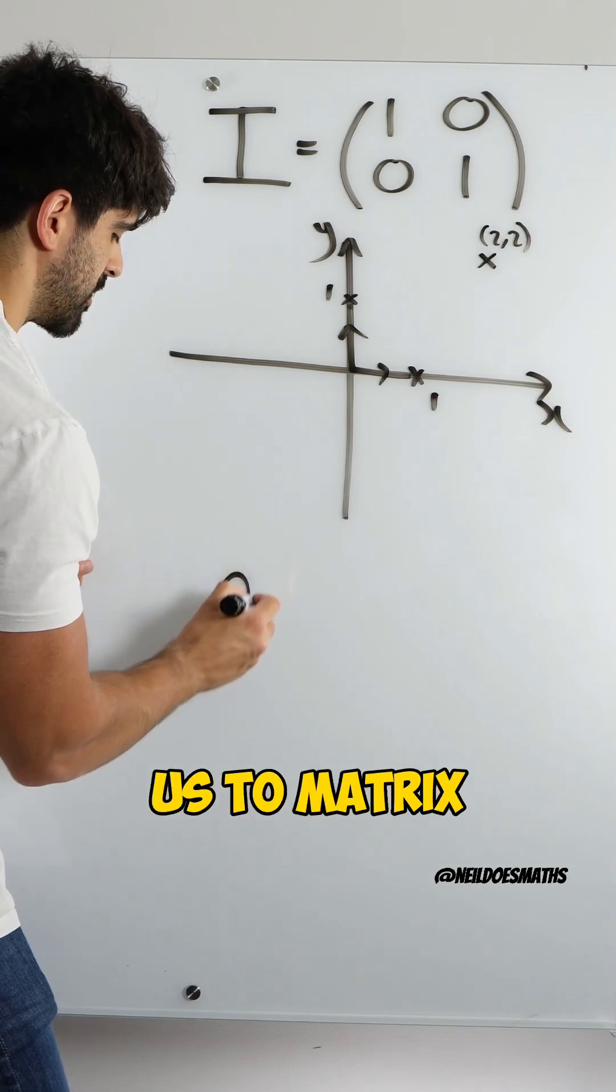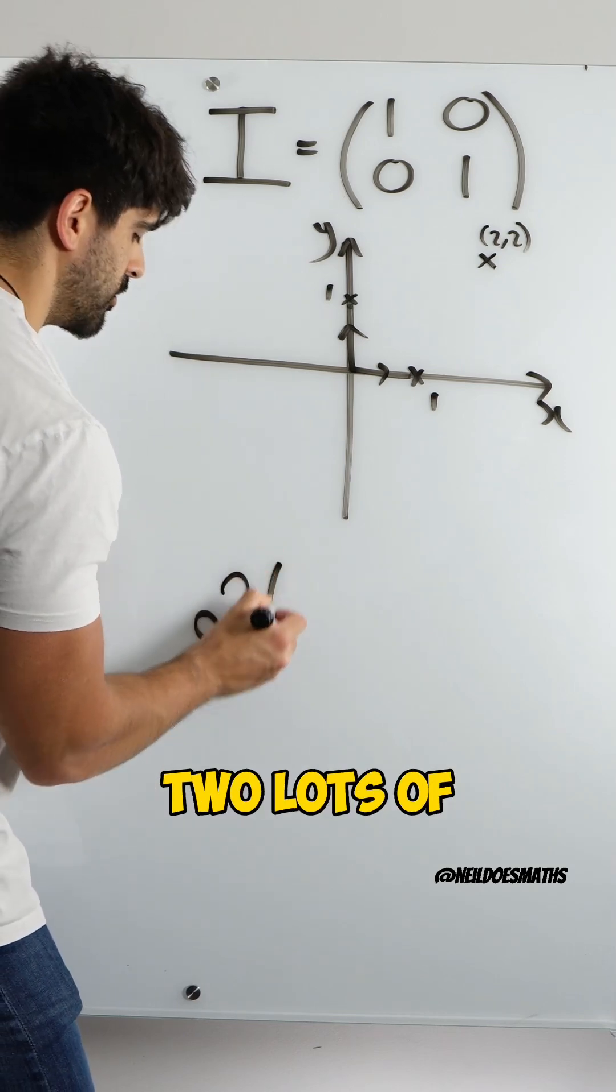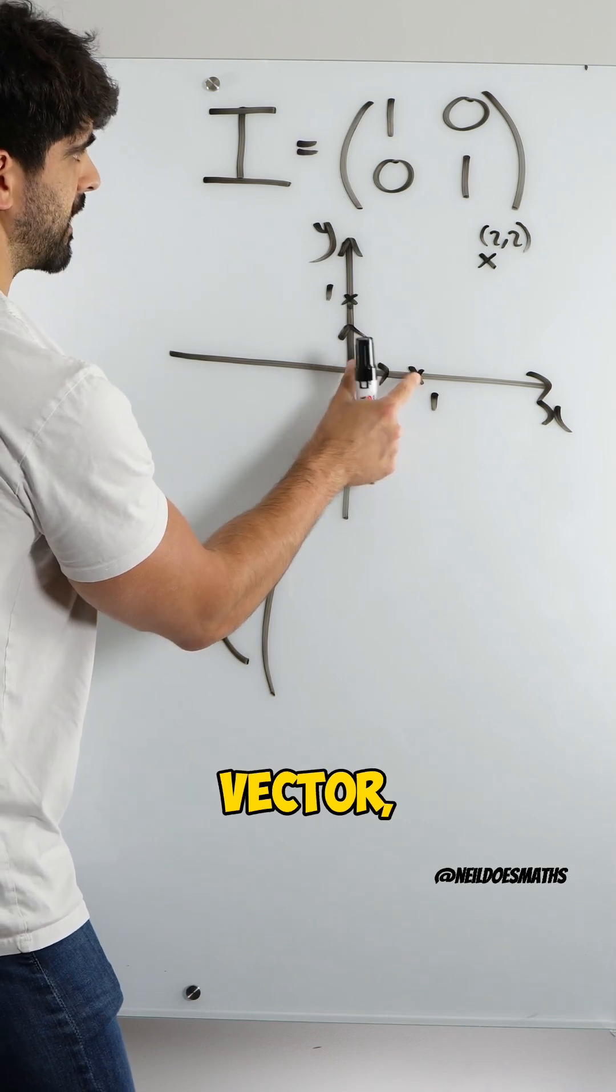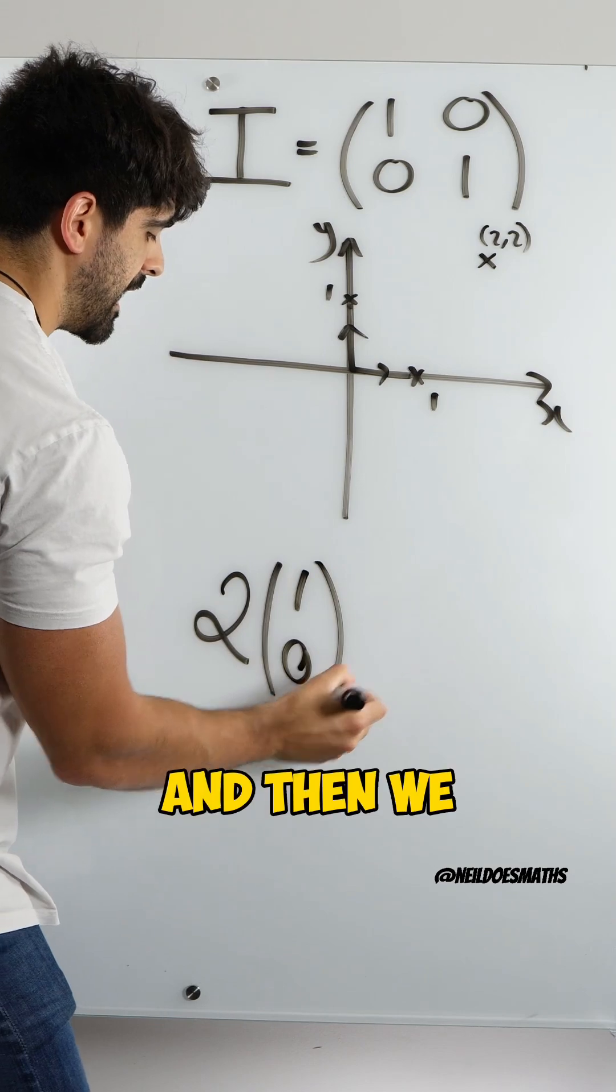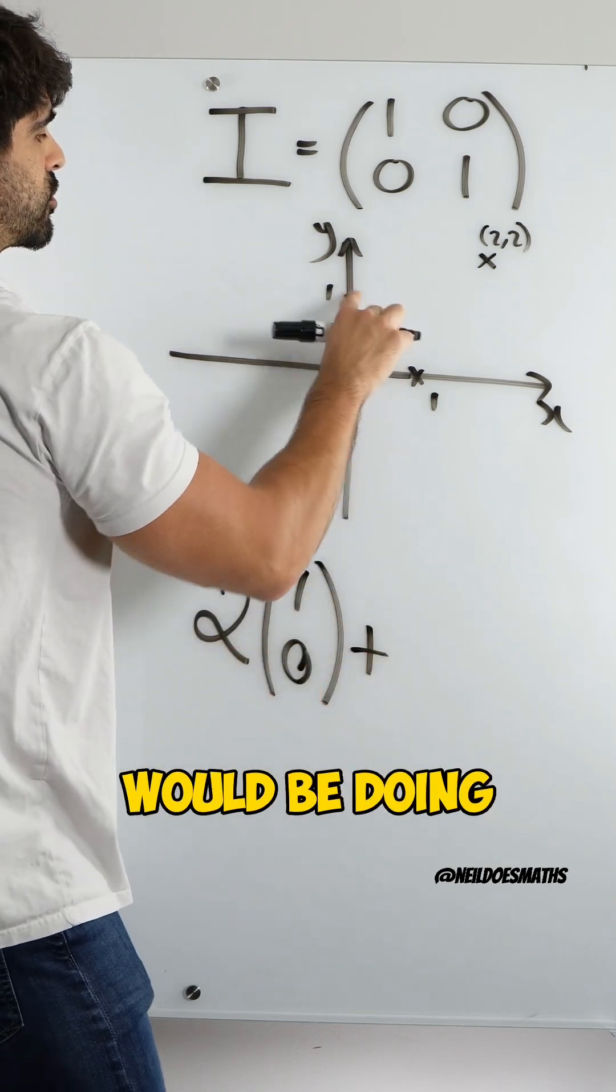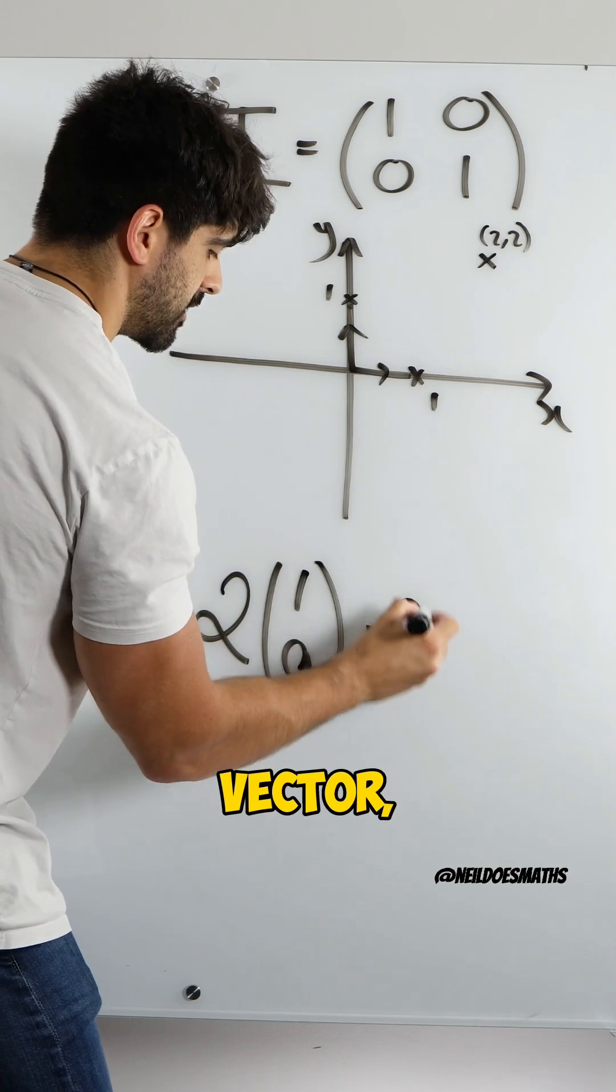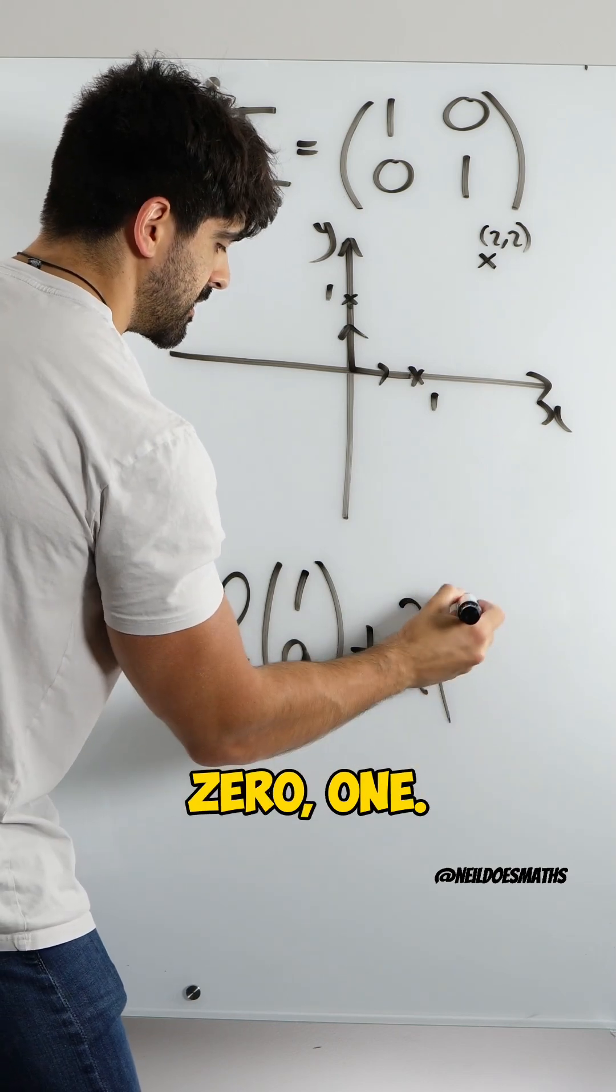So this brings us to matrix multiplication. Two lots of this horizontal vector, which remember is 1, 0. And then we would be doing two lots of this vertical vector. Two lots of 0, 1.